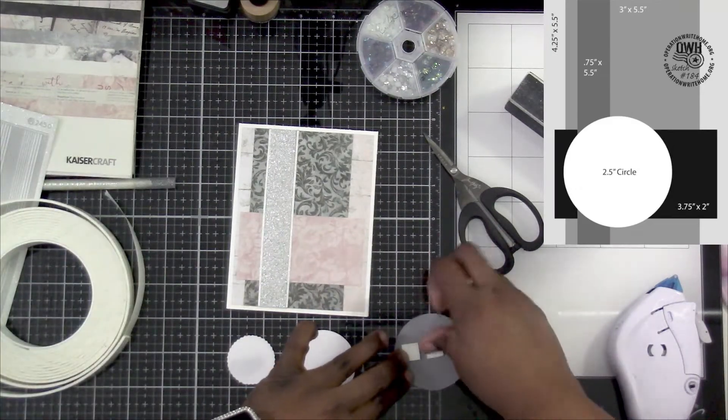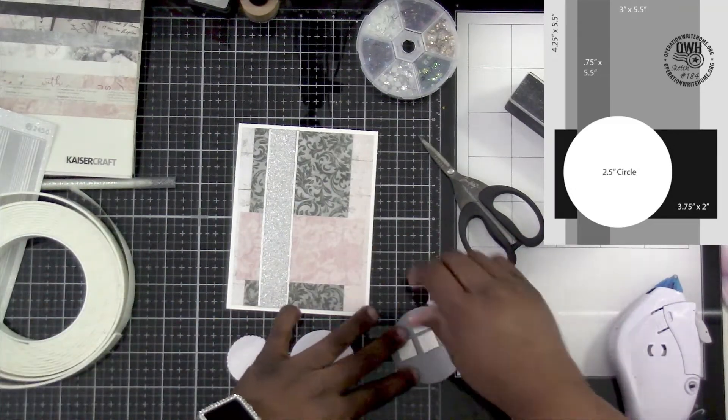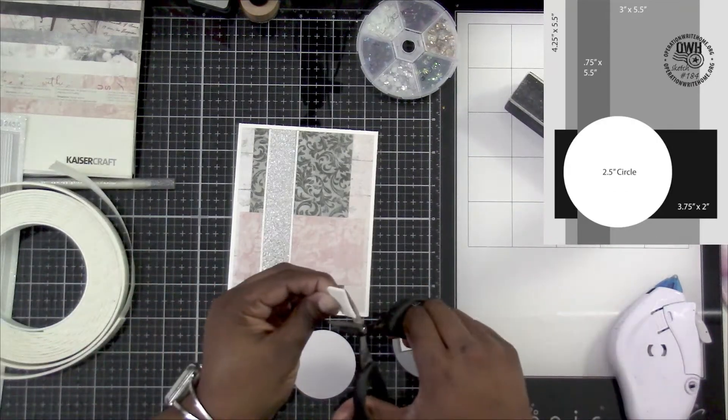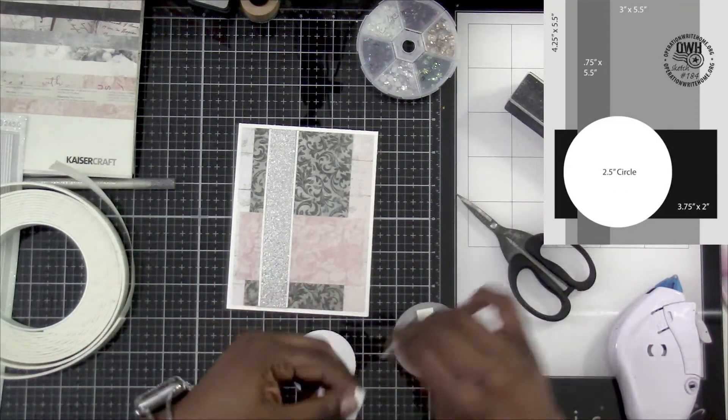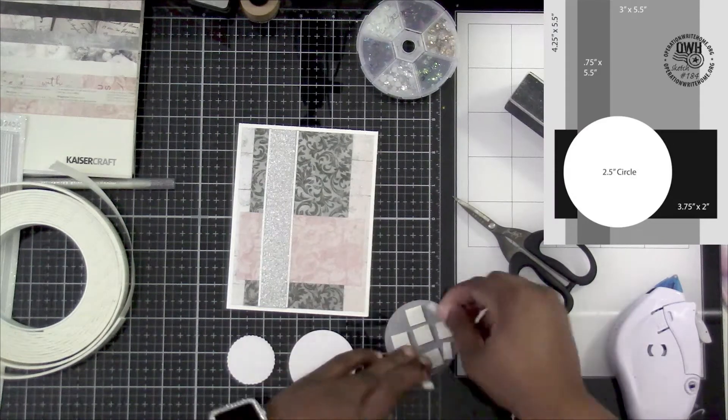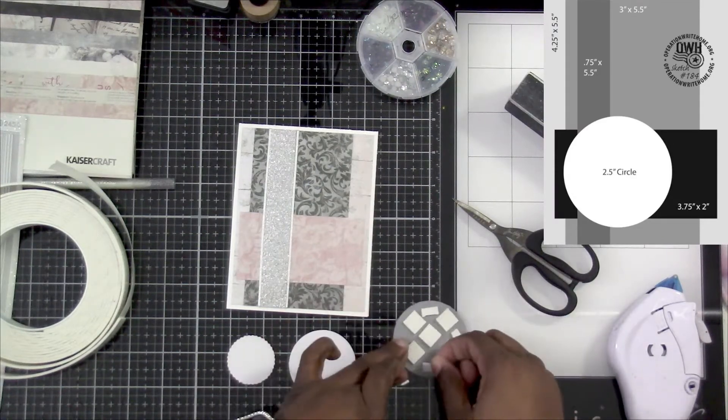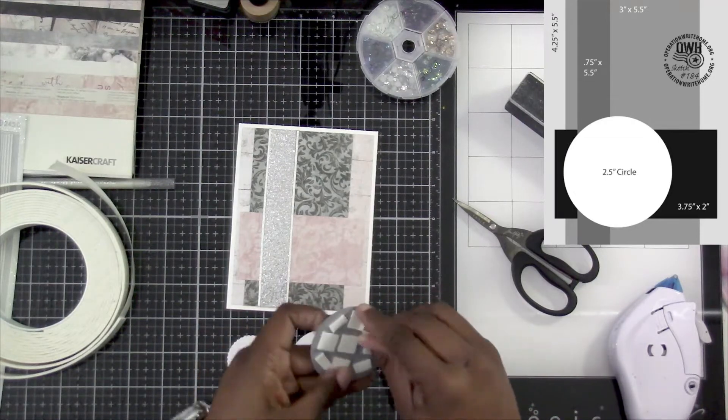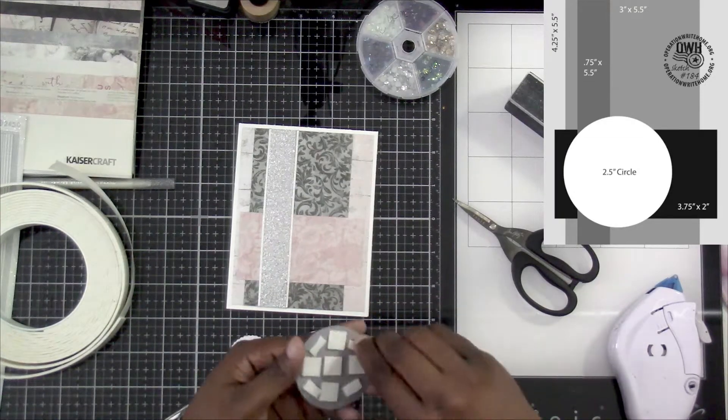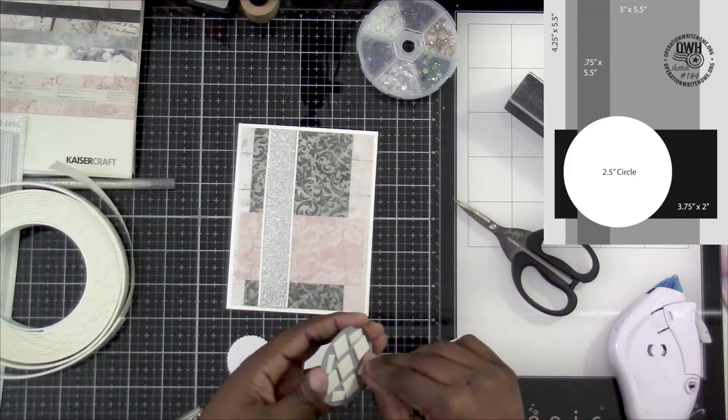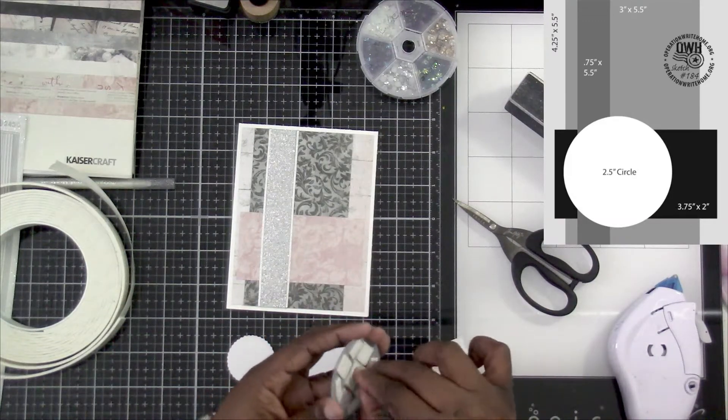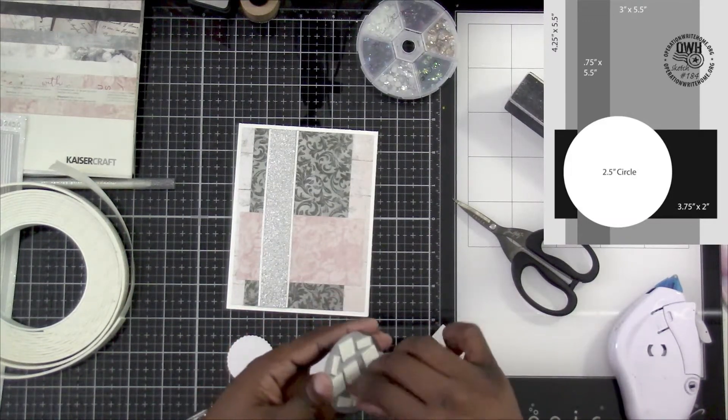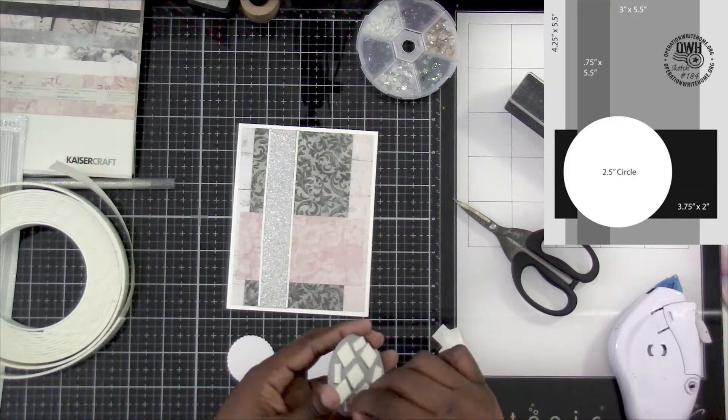Now what I decided to do, because I didn't have a two and a half inch circle punch, I went with I think this one is two and a quarter, the gray, and then the next circle up, which is the pattern paper, is two inches. And then I use the circle from the sentiments in the back of the paper collection. And yes, this looks like an obscene amount of foam, but this foam tape is actually not that thick. It's not bad.